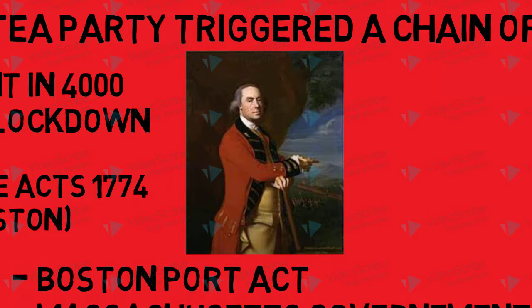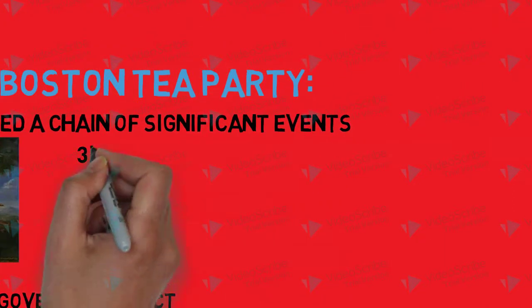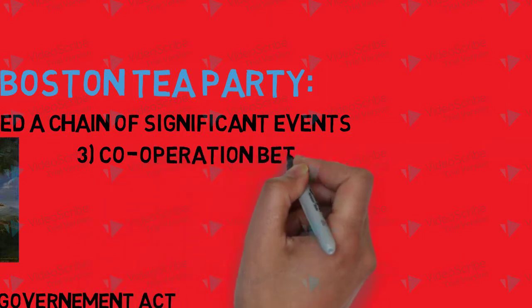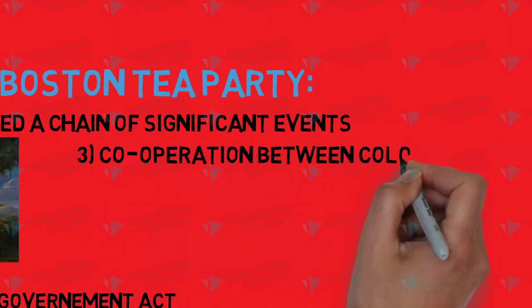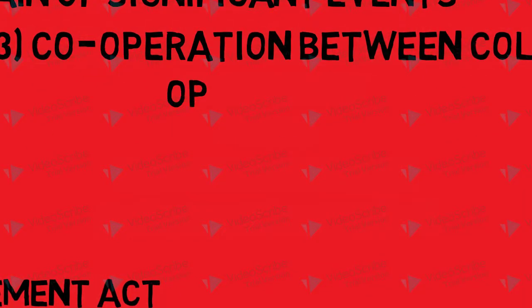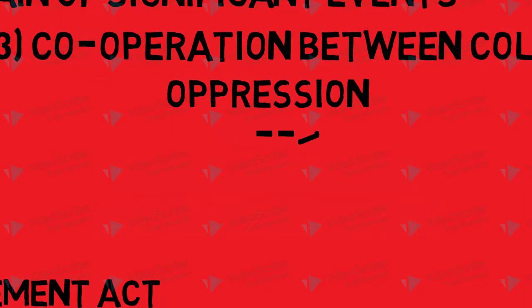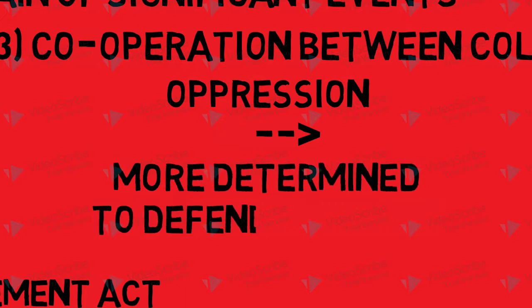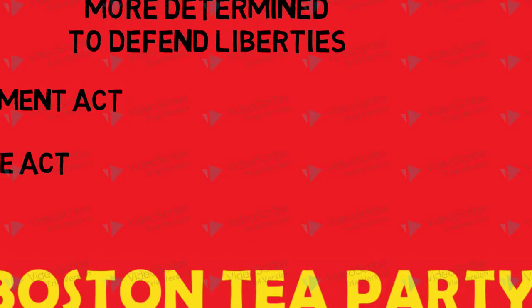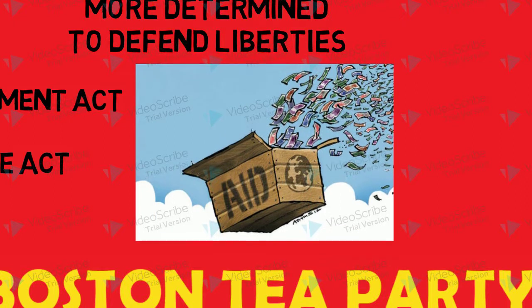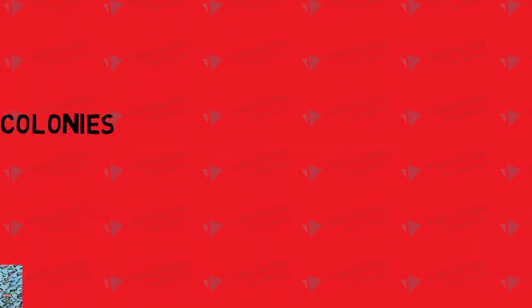However, these acts had an unintended side effect — they led to rising cooperation among colonists across America. The colonists recognized British oppression and opposed it, becoming more determined to defend their liberty. The colonies began to work together, sharing aid, which made them more united against their common enemy, Britain.